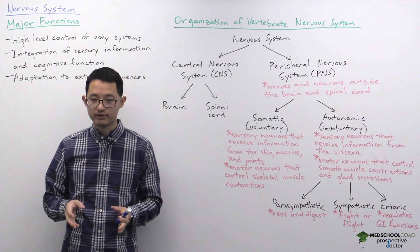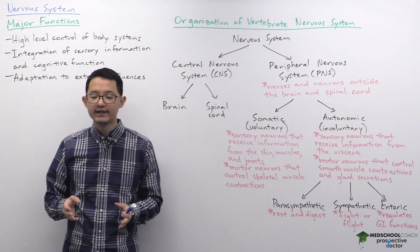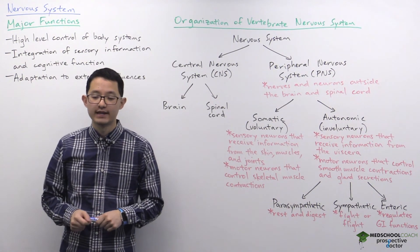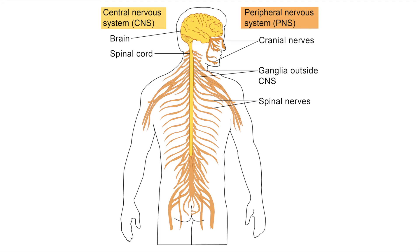The nervous system of vertebrates can be divided into the central nervous system and the peripheral nervous system, and you can see this division in the diagram. The central nervous system, or CNS, consists of the brain and the spinal cord. The peripheral nervous system consists of the cell bodies and neurons that are outside the brain and spinal cord, as well as the nerves that exit the brain and spinal cord.